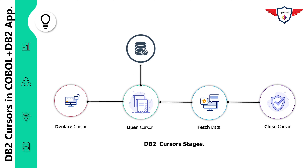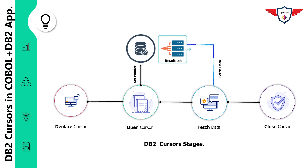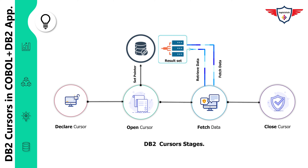The logic for the open, fetch, and close stages must be included in the procedure division. The open statement prepares the cursor for row retrieval but does not assign values to host variables. The fetch stage retrieves data from the result set and assigns it to host variables — here you specify how many rows to retrieve, subject to a maximum limit. Finally, the close stage completes processing and closes the cursor.